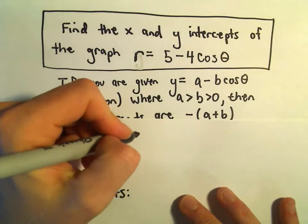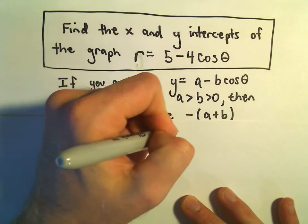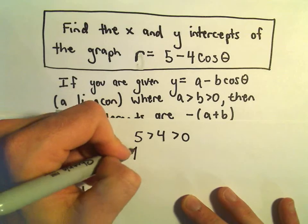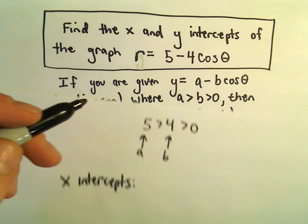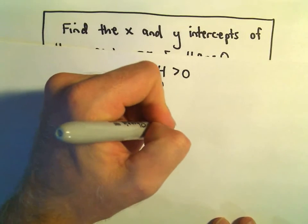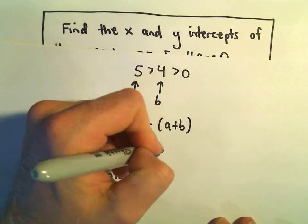So simply, we've got 5 is greater than 4 is greater than 0. This is our a value, this is our b value. Again, take negative of a plus b and then take a minus b.